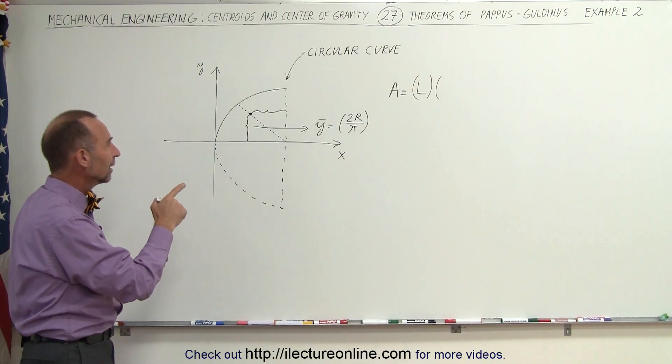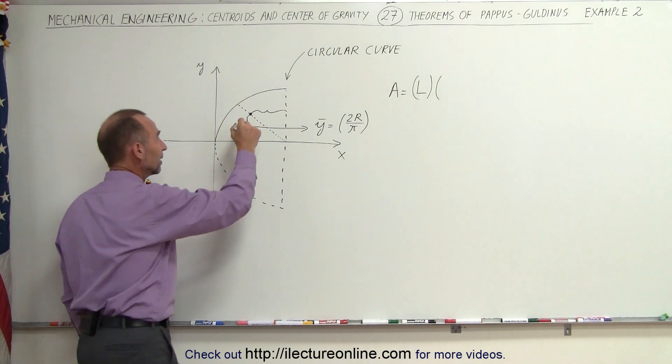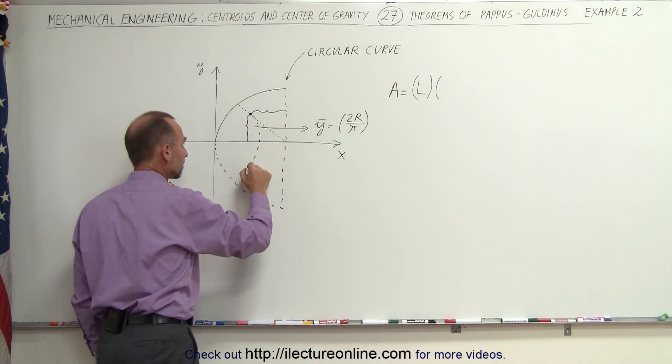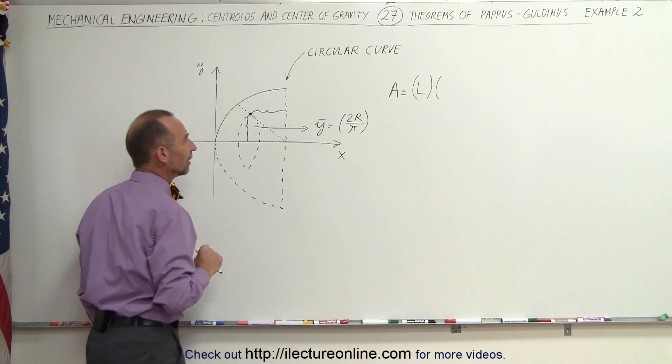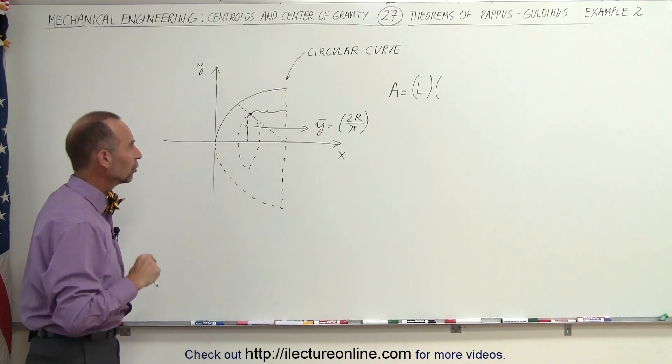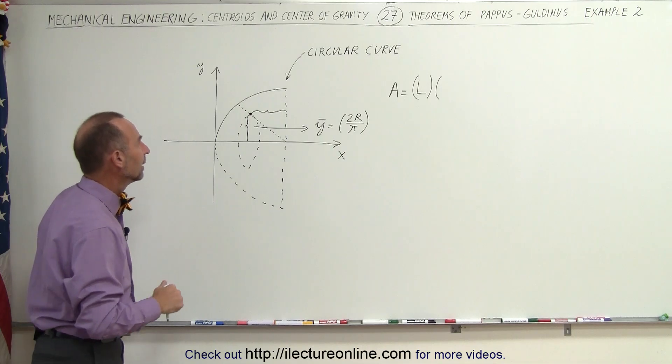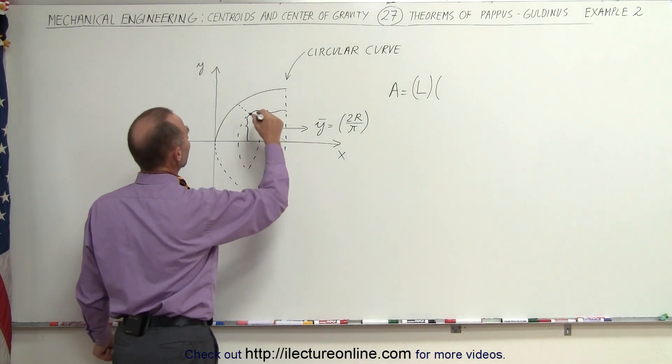Once we know that, then we can go ahead and realize that this is going to make a circular path like this. The circular path will be 2 pi times that distance, the y-coordinate, which is 2r over pi. Now, of course, we need a distance, right? We need a radius.